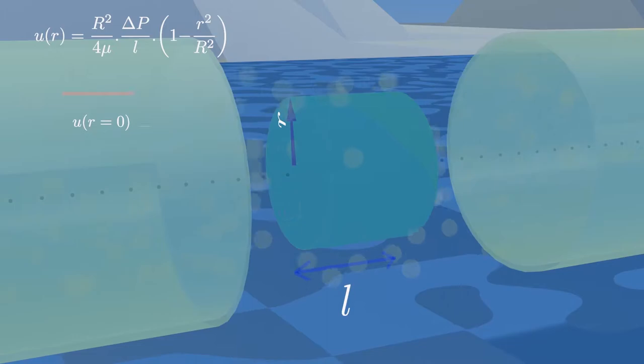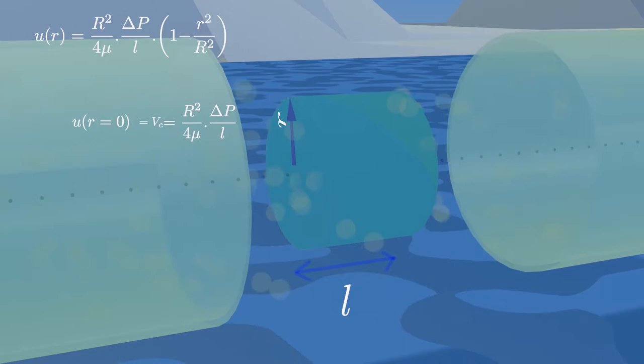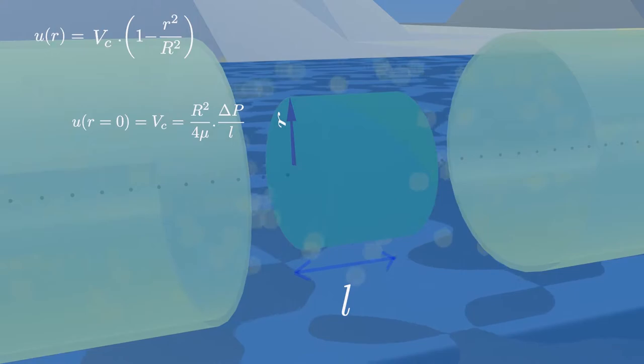At the center line of the pipe, where the radius is zero, our flow has the velocity given by this equation. This is the maximum velocity which occurs at the pipe center. To simplify our velocity profile even more, we shall use this maximum velocity notation.